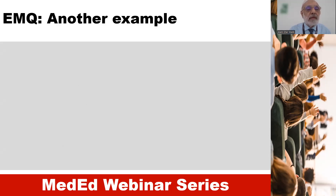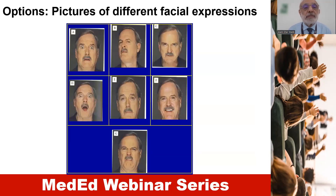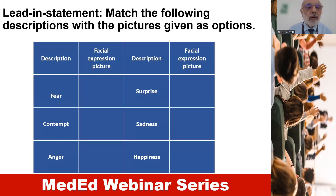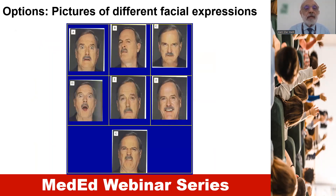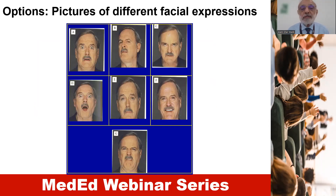Here is another interesting example. The theme is facial expressions and the options are pictures of different facial expressions. There are seven options, and the lead-in statement is: match the following descriptions with the pictures given as options. There are six descriptions and students have to match each description with the pictures provided. For example, for the description of fear, the most obvious choice would be picture A, and for a description of happiness, the most obvious picture is F.